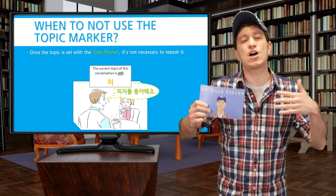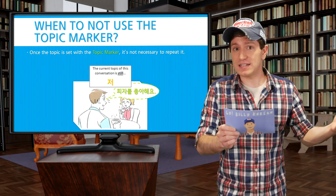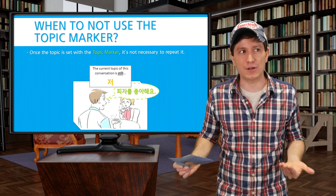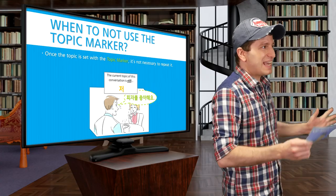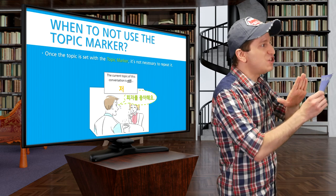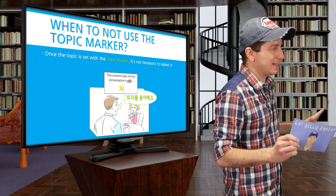So once something's on the sign, you can leave it there, say anything else you want, without having to repeat a new topic, and everyone will know that you're still talking about that previous topic. So again, once the topic is set with the topic marker, you do not need to repeat that noun again or use the topic marker. It's still up there unless you need to change it.